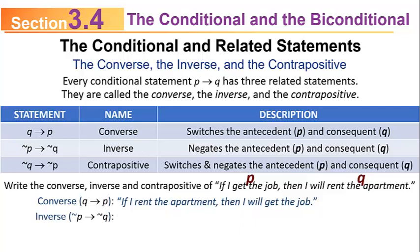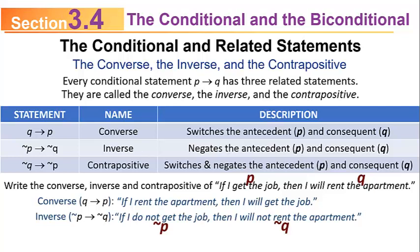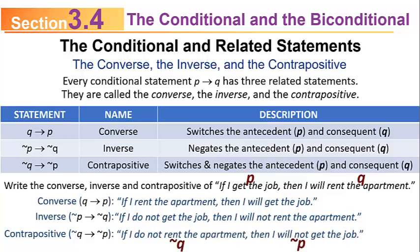The inverse does not switch, but negates both. If P is 'I get the job,' the negation is 'I don't get the job.' If Q is 'I will rent the apartment,' the negation is 'I will not rent the apartment.' So the inverse is: if I do not get the job, then I will not rent the apartment. And the contrapositive does both — switches and negates — giving: if I do not rent the apartment, then I will not get the job.